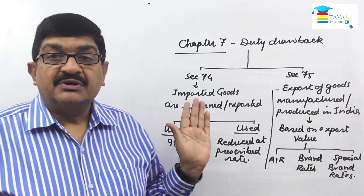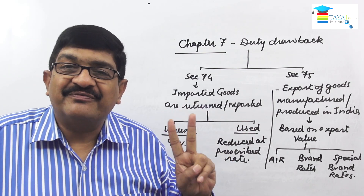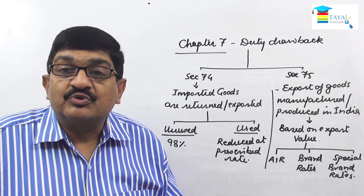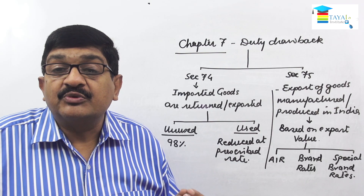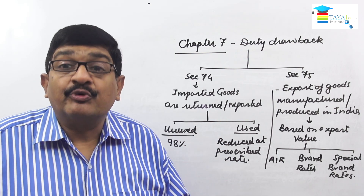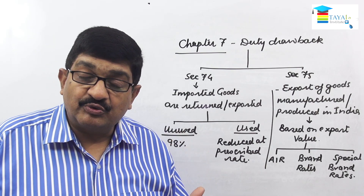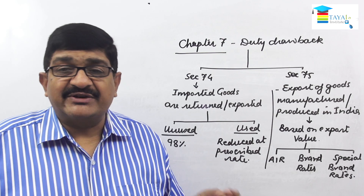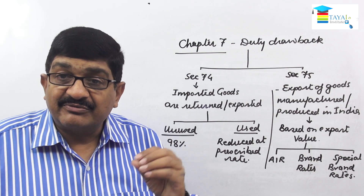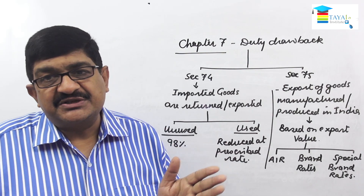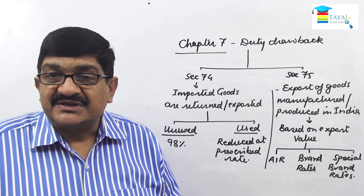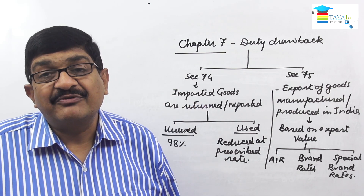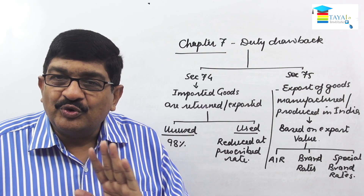In summary, duty drawback is a refund of duty under two situations. Under section 74, same goods are returned or exported — either used or unused. If unused, maximum duty drawback is 98%. If used and then returned or exported, the rate is reduced depending on whether the goods were for personal or commercial use, whether they are motor vehicles, and the time period involved. The maximum period for duty drawback under section 74 is two years, with extensions possible up to a total of four years. After four years, no duty drawback is allowed under any condition.